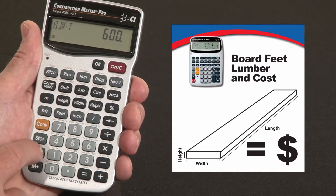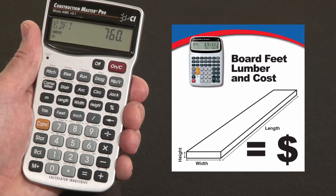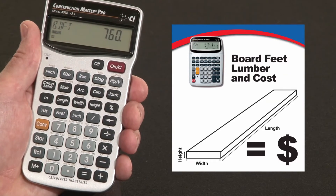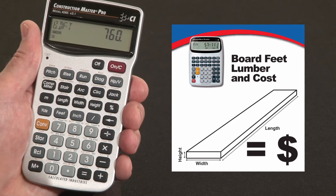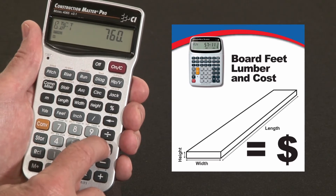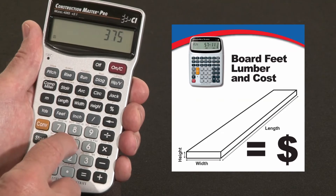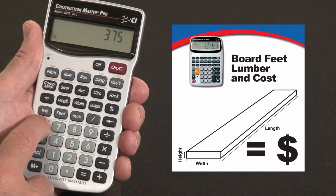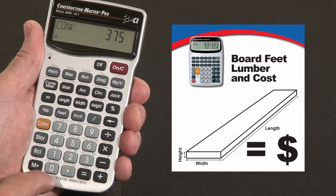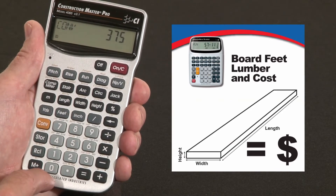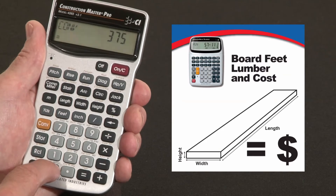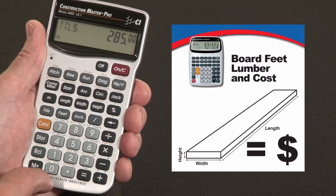Now I can recall what's in the memory, so I have a total of 760 board feet. Say this particular material goes for $375 per thousand board feet. So I would say times 375, Convert, and over the zero key is the Cost function. So that would be $285 worth of lumber.